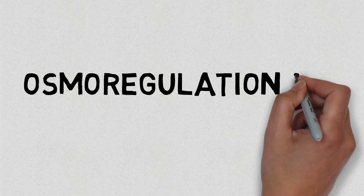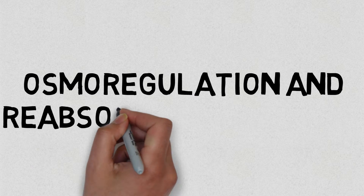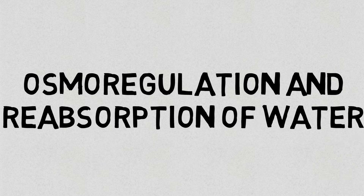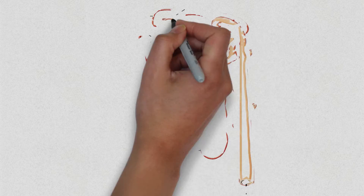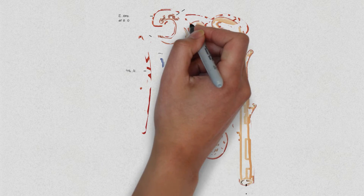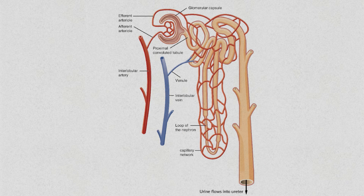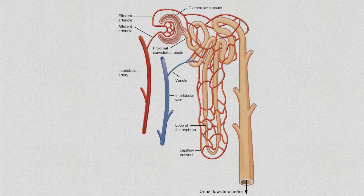In this video we will be looking at how water is reabsorbed into the blood in nephrons. By this stage you should be familiar with ultrafiltration and selective reabsorption. These processes take place in the glomerulus and the proximal convoluted tubule. This picture shows the nephron surrounded by the capillaries. The water will pass from the nephron into the interstitial region and from the interstitial region back into the capillaries.